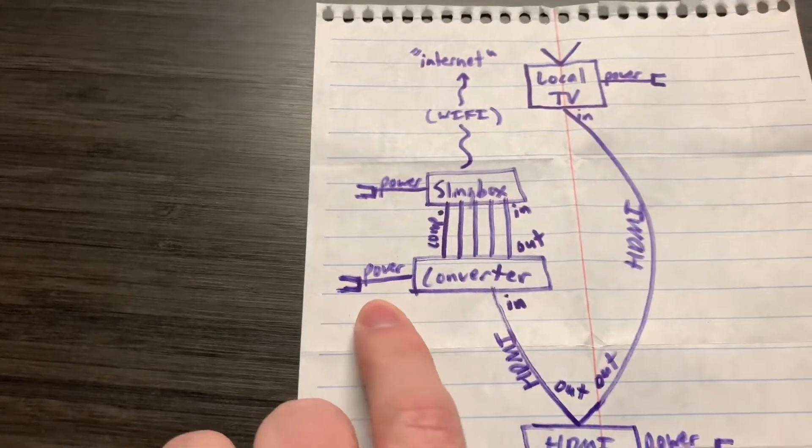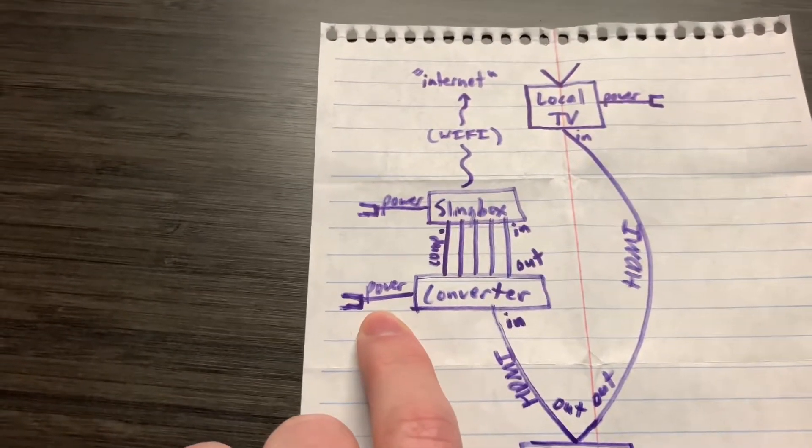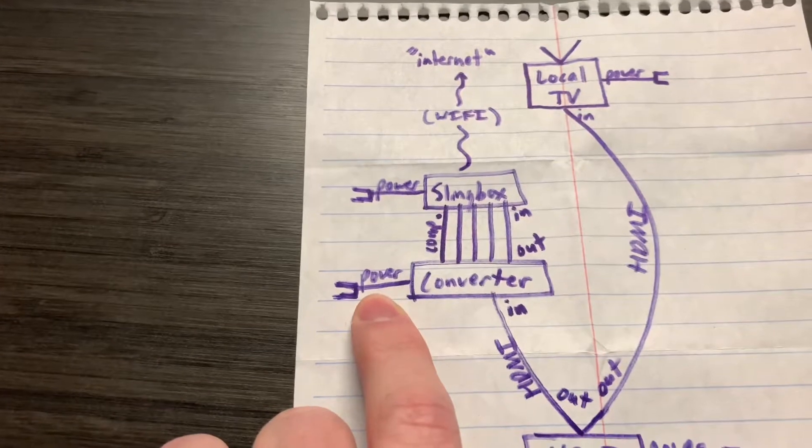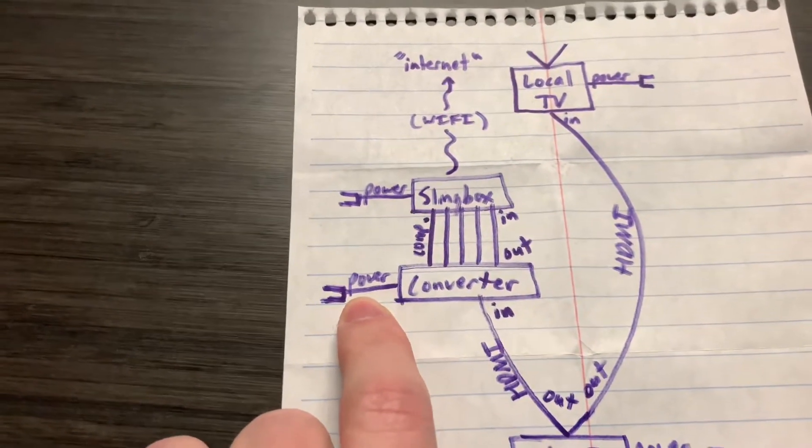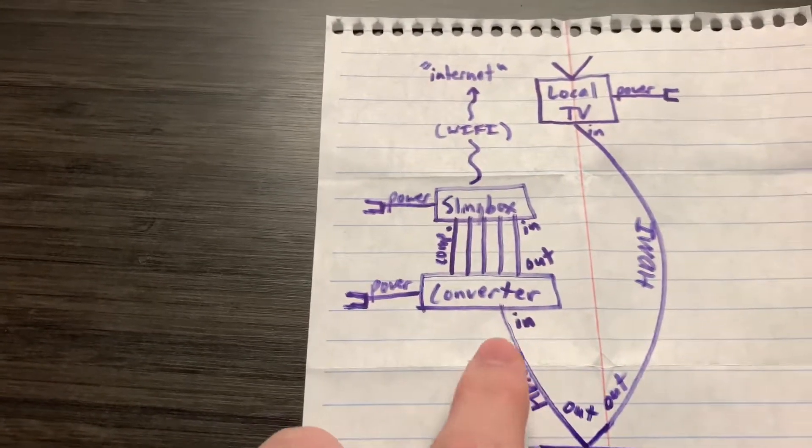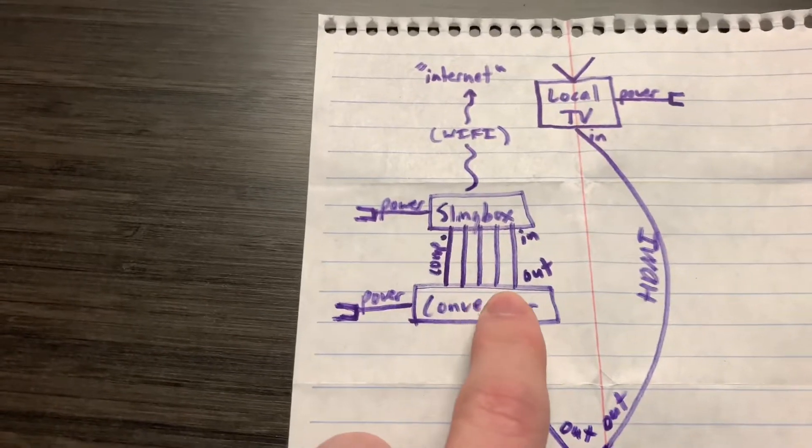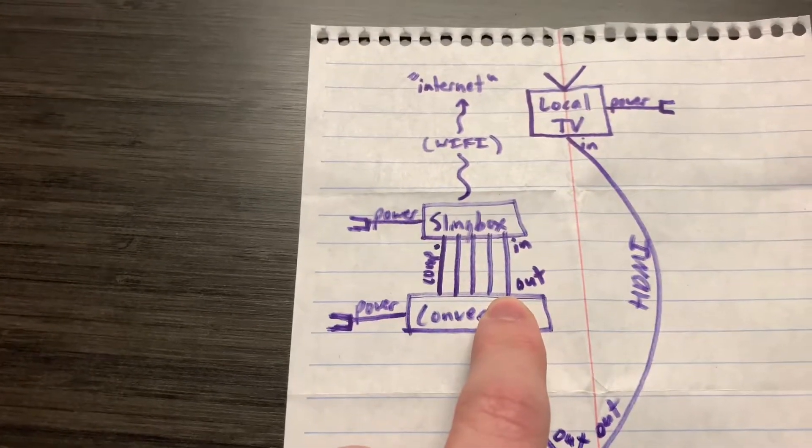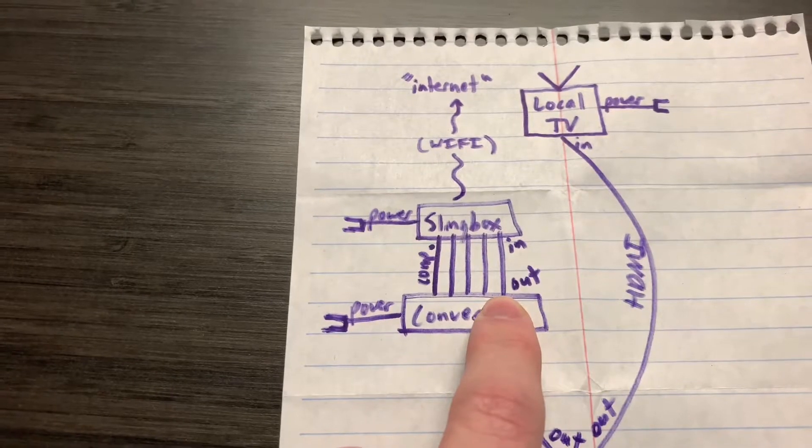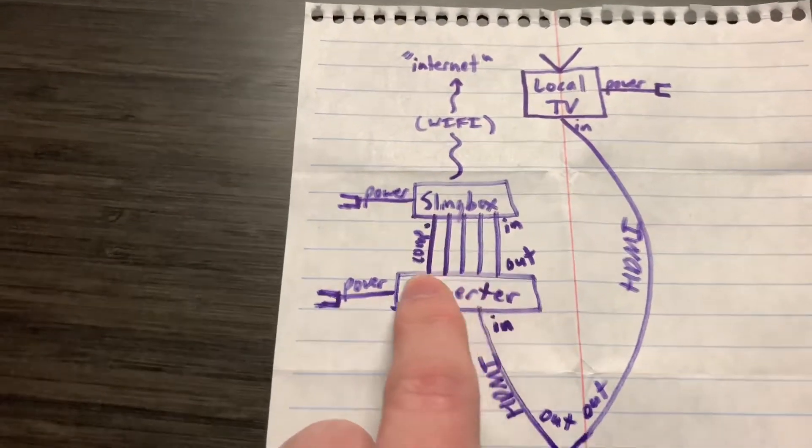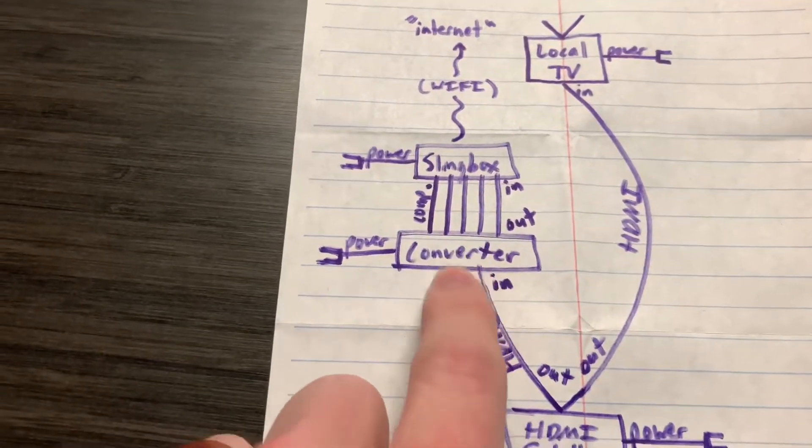And the converter is going to have a power cable that's going to turn it on and off. And so the HDMI comes into the converter. And then what happens is it has like a red, blue, and green with a red and white for audio cables. There's five of them and they come out of the converter.